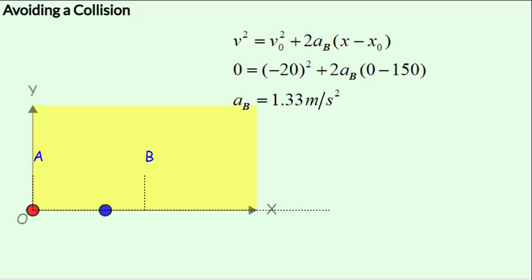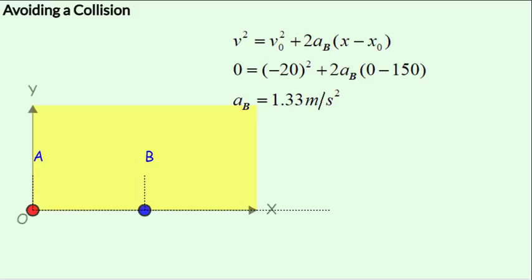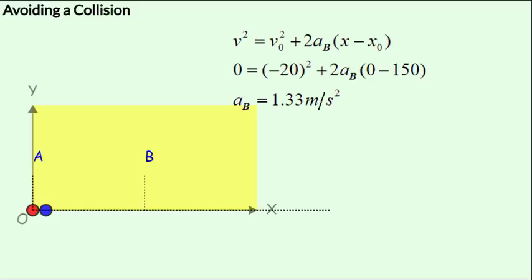Make sure you exactly understand what is happening from A's frame of reference. B approaches A with a slower and slower speed, which is 0 just at the point where they are about to collide. Then B begins to move away and its speed begins to increase. The reason is B's velocity with respect to A is in the negative direction, whereas its acceleration with respect to A is in the positive direction. This causes the speed to decrease until it reaches 0 with respect to A, just as they are about to collide, and then B's speed begins to increase in the direction of acceleration, so B moves away.